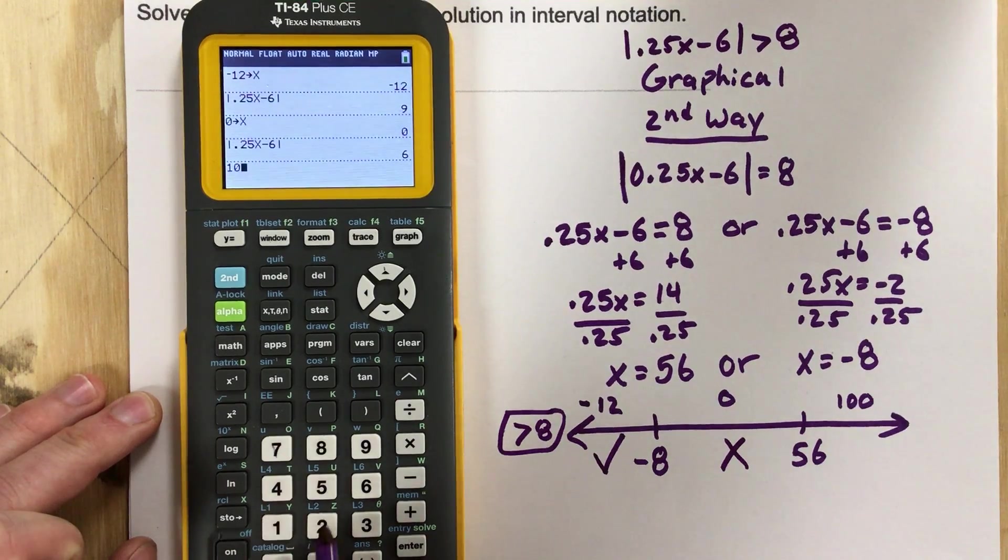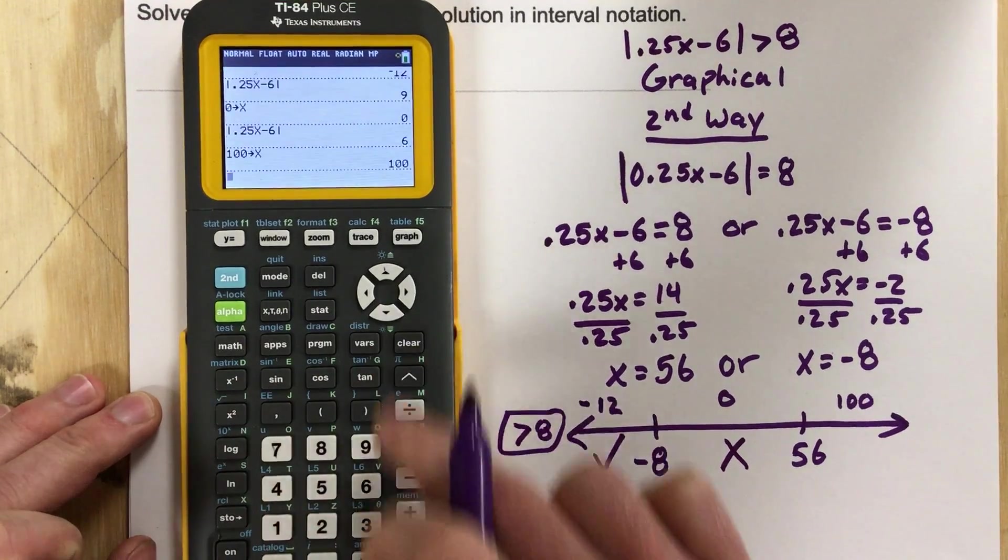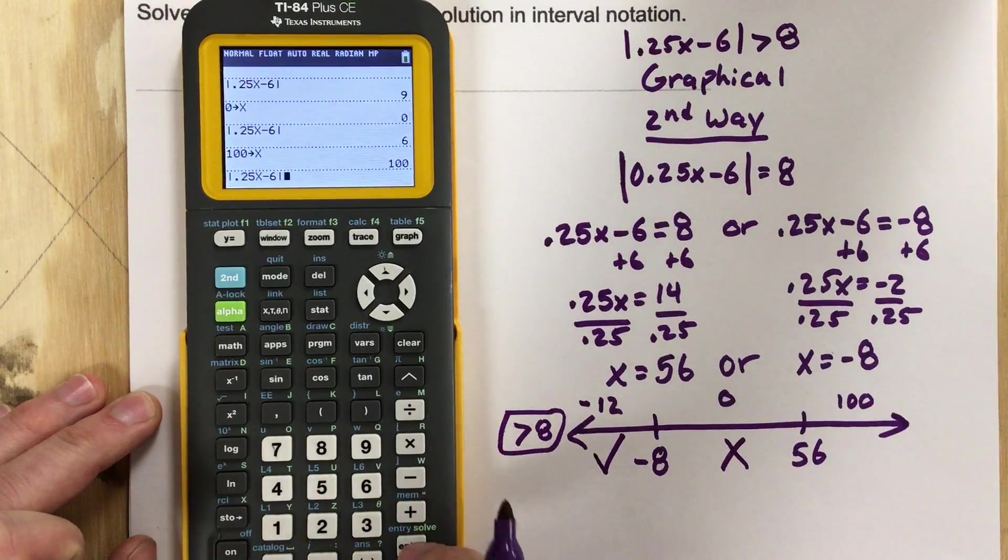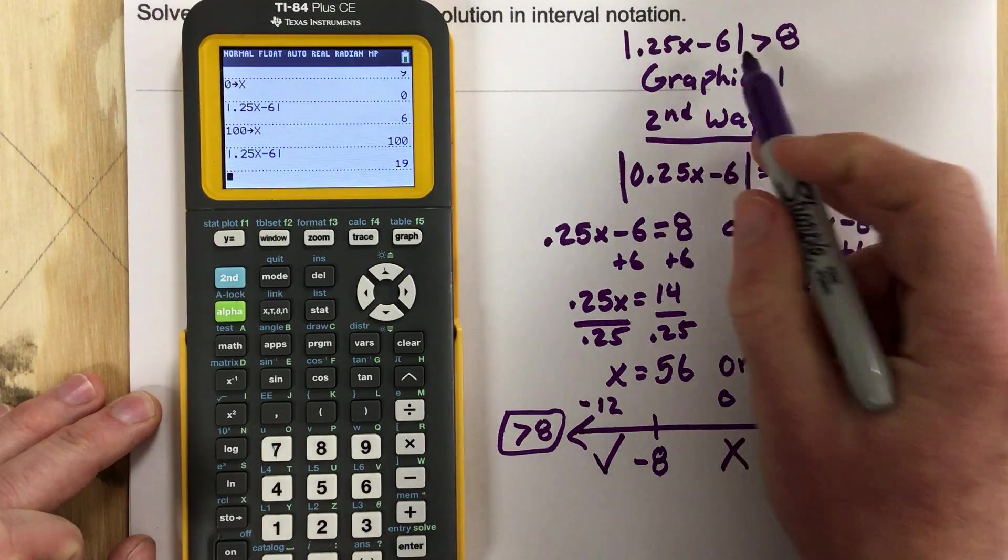And now I'm going to plug in 100, store it as x, grab that again, and I get 19. Is 19 greater than 8? Yes it is.